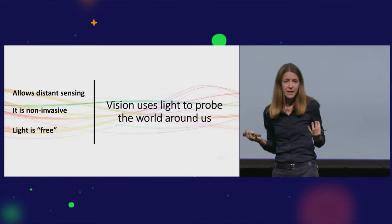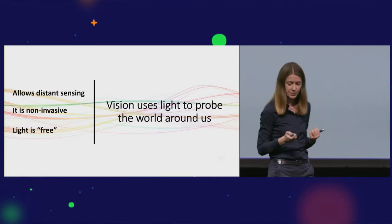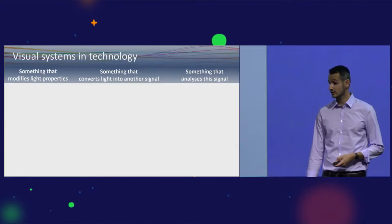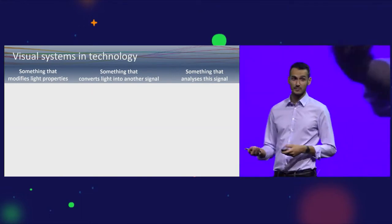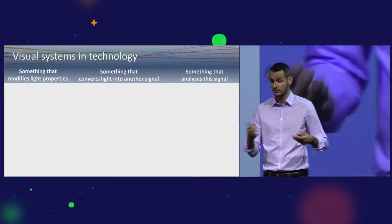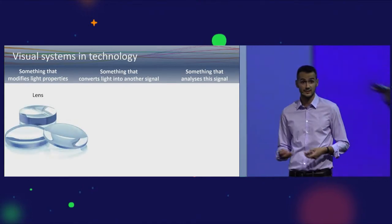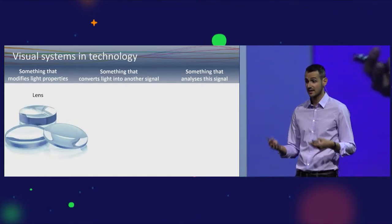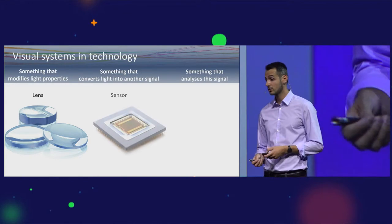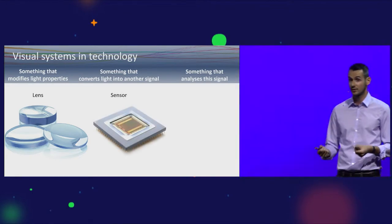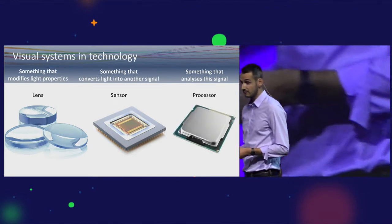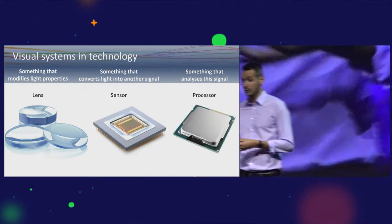Light is basically free, it's literally falling from the sky. So how can we use light to extract useful properties about the environment? To use light you need a visual system, and these visual systems are composed of three parts: something that modifies light's properties, converts light into light, for instance to make it converge, that's the optics. That would make it converge onto a sensor, the part that actually takes light and converts it into another signal.